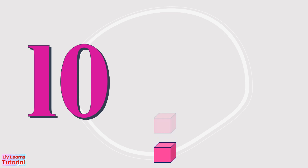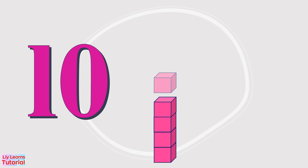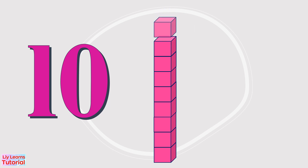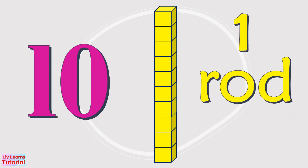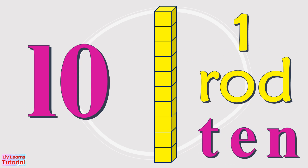One, two, three, four, five, six, seven, eight, nine, ten. There are ten blocks. We can also say this is one rod. When we count by tens, we say ten for one rod because each rod is equal to ten units or ten blocks.